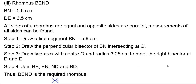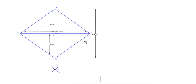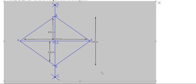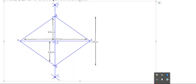Join BE, EN, ND, and BD. Thus the required rhombus BEND is formed. This is the required rhombus BEND. Thank you for watching the complete video. Please like the video, share it with your friends, and subscribe to the channel. Thank you, students.